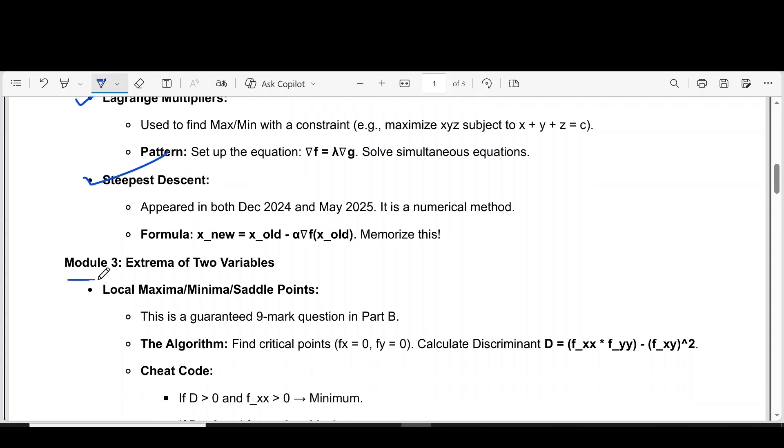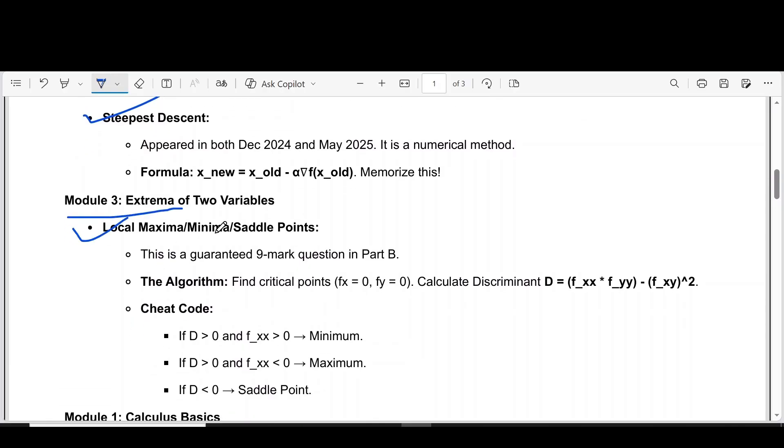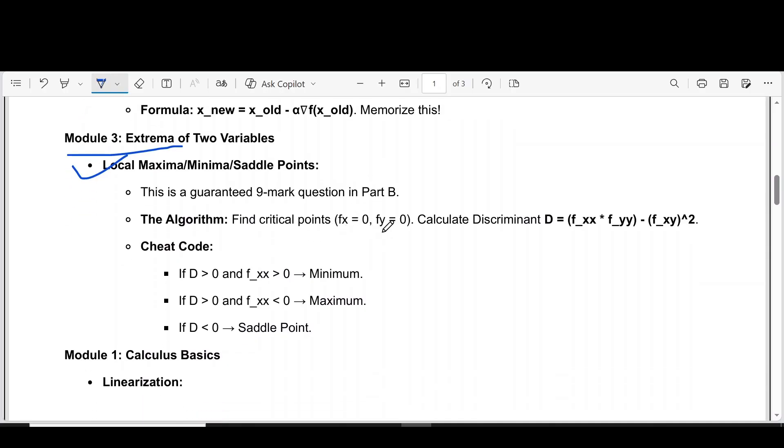Then coming to module 3, extrema of two variables. First question, it is local maxima or minima or saddle points. Find critical points, fx equal to 0, fy equal to 0, calculate discriminant.